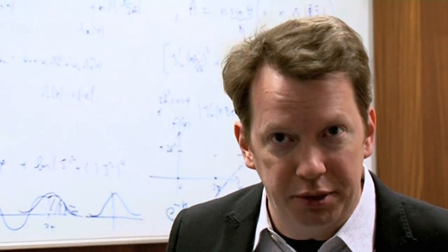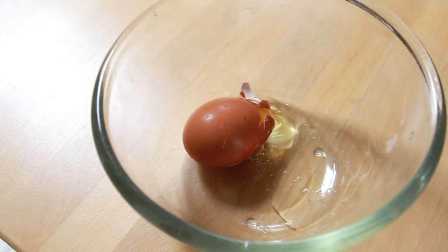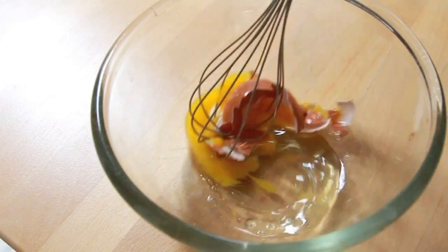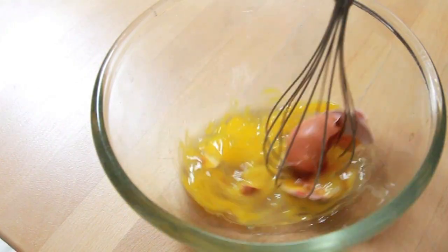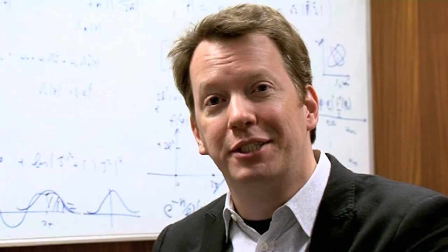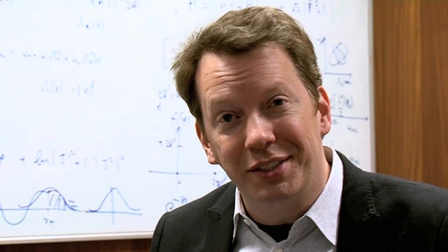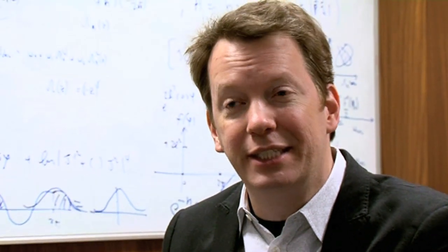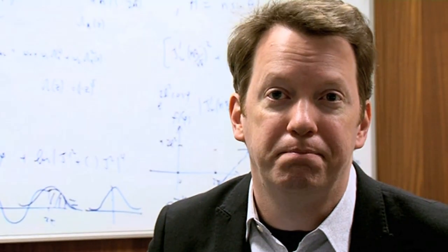The macroscopic world is irreversible. You can take the egg and you can scramble it, but you can't unscramble the egg very easily. Or to put it this way, if you come across a cool glass of water, it might have been that ten minutes ago it was a cool glass of water, or it might have been a warm glass of water with an ice cube in it. You can't tell the difference from the present state of the system. Whereas Newton's laws say that if you know the present state of the system, you can always uniquely tell us where it came from.